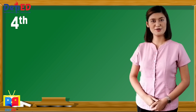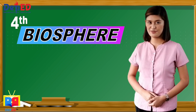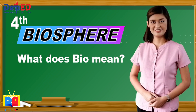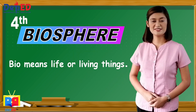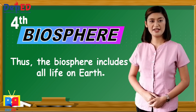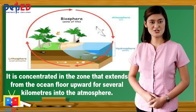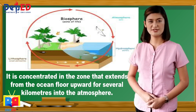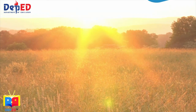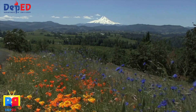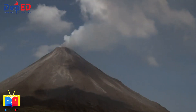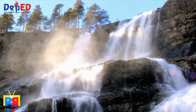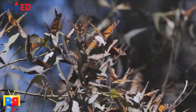The last subsystem of the Earth is the biosphere. 'Bio' means life or living things, so the biosphere includes all life on Earth. It is concentrated in the zone that extends from the ocean floor upward for several kilometers into the atmosphere. Plants and animals depend on the physical environment for life. However, organisms do more than just respond to their physical environment — through countless interactions, organisms help maintain and alter it. Without life, the makeup and nature of the solid Earth, hydrosphere, and atmosphere would be different.